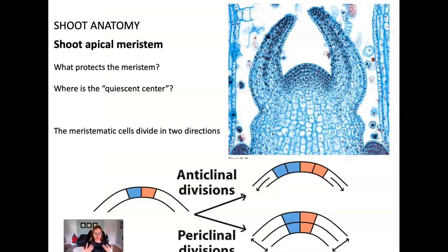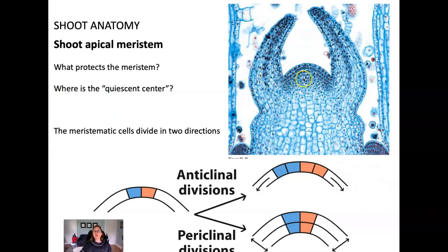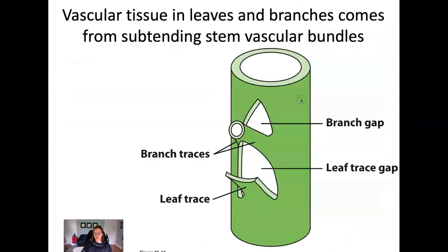Now we're going to go inside the shoot and start at the shoot apical meristem — a little bit of review. The shoot apical meristem is at the apex or the tip of each growing shoot, and it's where all of the new tissues are produced in the growing above-ground part of the plant. The youngest cells are here, except right at the center tip — that would be the quiescent center. The quiescent center cells are very small cells that are mostly nuclei and divide very rarely, and when they divide they produce cells that eventually differentiate into ground tissue, vascular tissue, or dermal tissue.